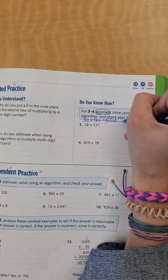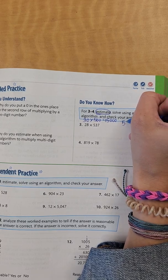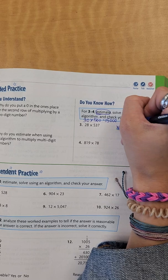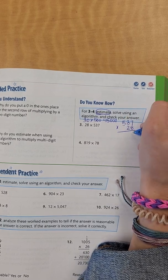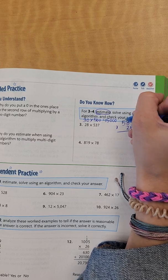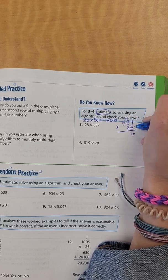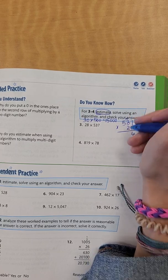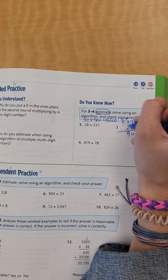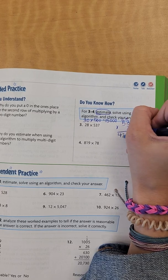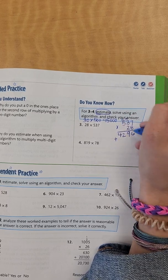So now I'm going to work out my problem, 537 times 28. 7 times 8 is 56, put down my 6, regroup my 5. 3 times 8 is 24, plus 5 is 29. Regroup my 2. 8 times 5 is 40, plus 2 is 42. Then I'm going to add.